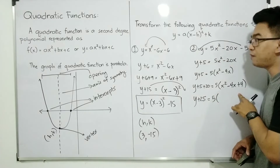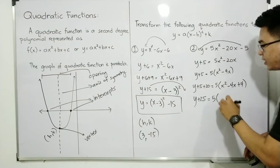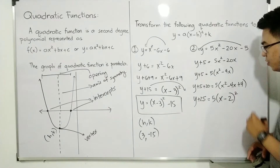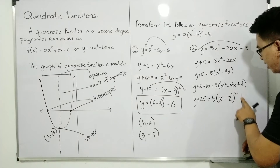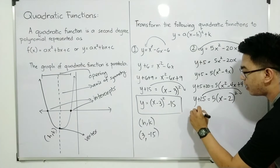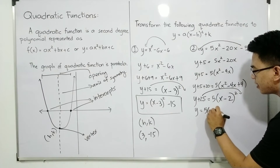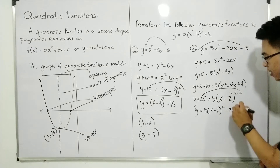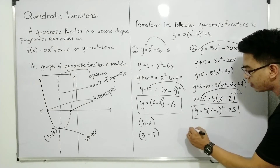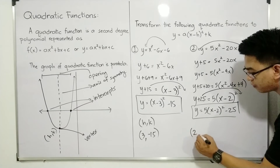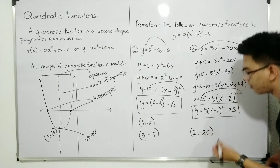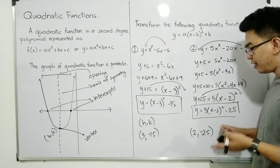To express x squared minus 4x plus 4 as a squared binomial: get the square root of x squared which is x, get the square root of 4 which is 2, and then copy the sign which is minus. So we will transpose 25 to the other side, and it will become negative. Our final form is y is equal to 5 times x minus 2 squared minus 25. This is the standard form of the quadratic function y is equal to 5x squared minus 20x minus 5. To identify your vertex: this is negative 2 so the h value becomes positive 2, and your minus 25 stays as is. So the coordinates of your vertex are 2, negative 25.